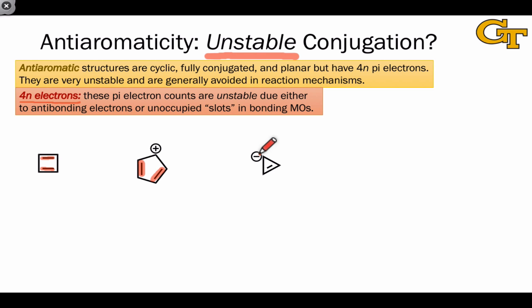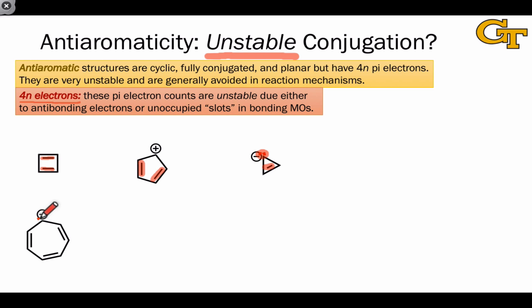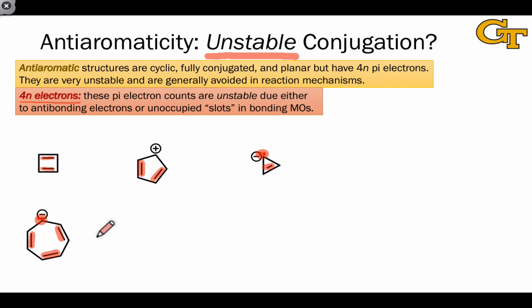The cyclopropenyl anion, which has a lone pair on this carbon, is also anti-aromatic. It's cyclic, it's planar, it's fully conjugated, and it's associated with 4 pi electrons in the pi system. Finally, let's consider this anion which bears a lone pair on this carbon. Assuming the molecule is planar, it's fully conjugated and cyclic, and it contains 8 pi electrons — 2 from the lone pair and 2 each from the pi bonds for a total of 8. What tends to happen in cases like this, as with cyclooctatetraene, is that they tend to pucker to avoid conjugation completely. Such molecules are best considered non-aromatic rather than anti-aromatic.